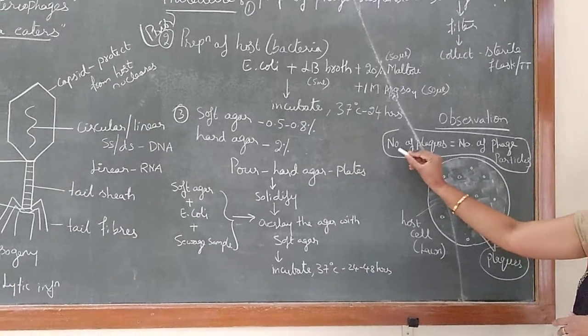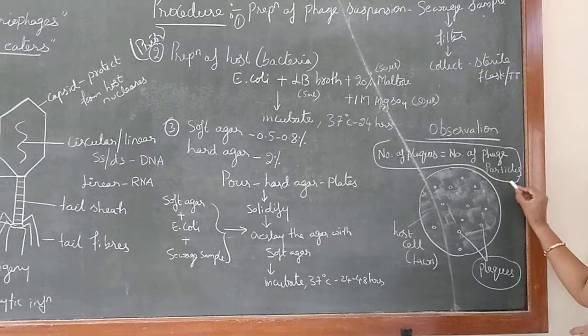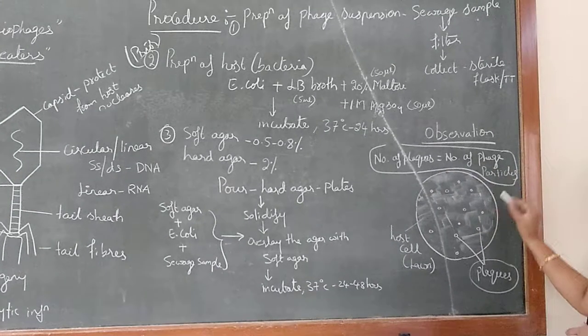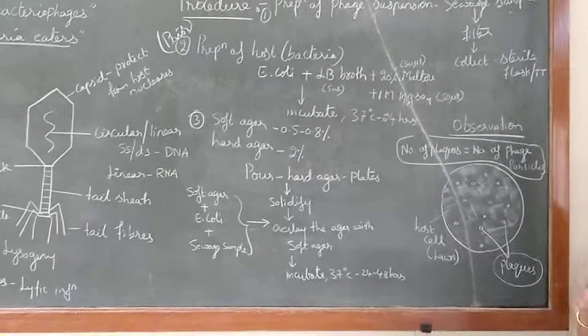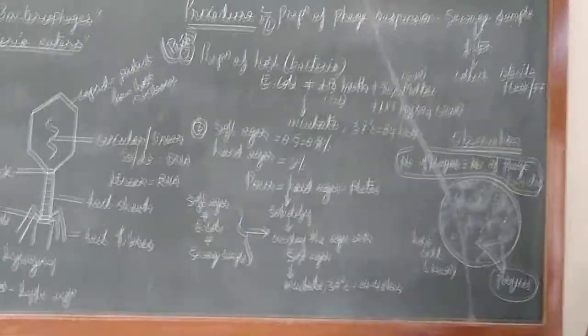And one more important thing: the number of plaques equals the number of phage particles. Please remember, number of plaques equals the number of phage particles. We can count the number of plaques and we can roughly say how many phage particles have been present in that seaweed sample. I hope it is clear.